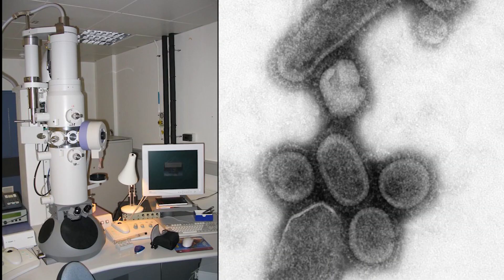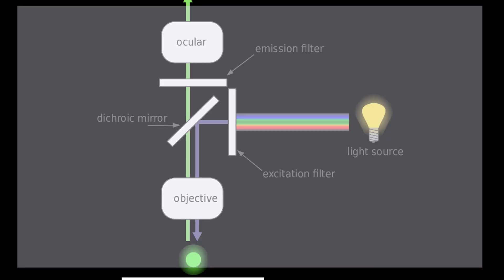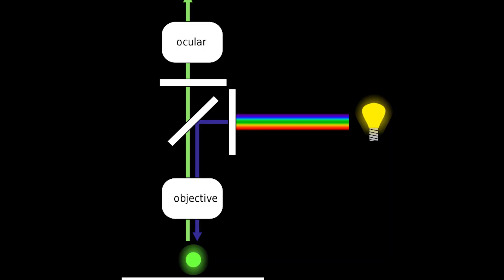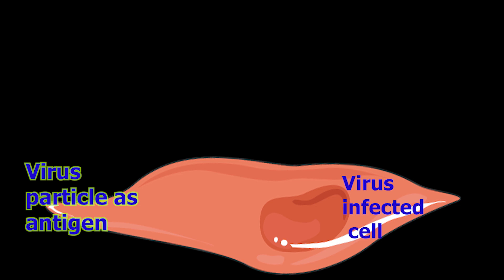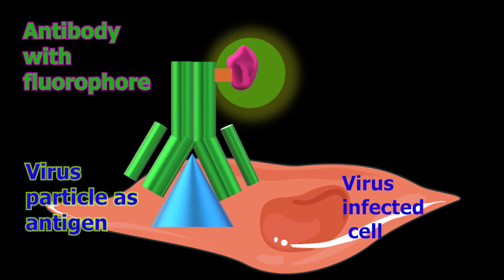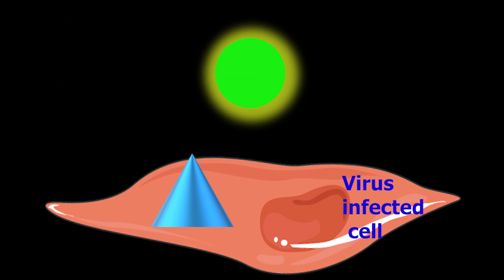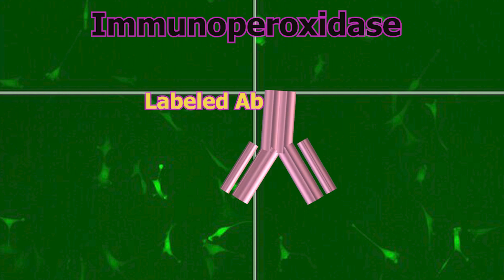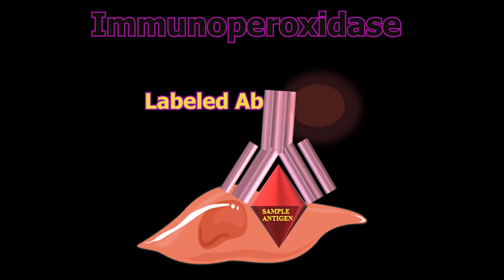Identification of virus in the culture. Microscopy: electron microscopy can be used to identify the virus in reference labs and research labs. Fluorescent microscopy and immunofluorescence: if the cells or tissue are infected with the virus, an antibody specific to that virus will be able to bind it. When the antibodies are tagged with immunofluorescent material, they are easily identified using a fluorescent microscope. Immunoperoxidase-tagged antibodies produce a dark brown color for identification.